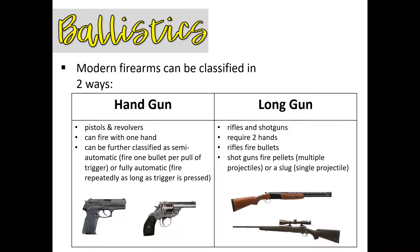Modern firearms are classified in two ways: handguns and long guns. Generally, long guns are designed to be held by both hands and braced against the shoulder, whereas handguns can be fired with a single hand. Handguns include things like pistols and revolvers. Long guns include rifles and shotguns. You need to be able to recognize these in a picture and classify them accordingly.